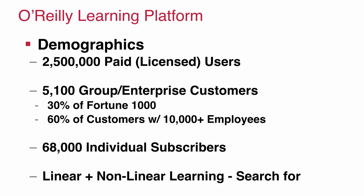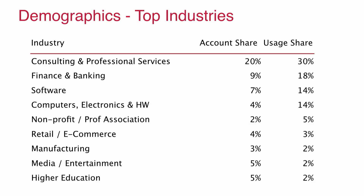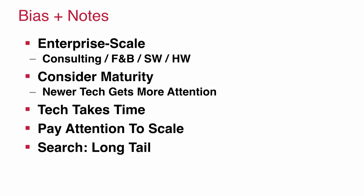That's made up of 5,100 different companies. A lot of big companies — 60% have more than 10,000 employees — and 68,000 individual users. While they come from all sorts of verticals, they're concentrated in consulting, finance, banking, software, and computers. Even the consulting companies that are small are probably working for big firms.